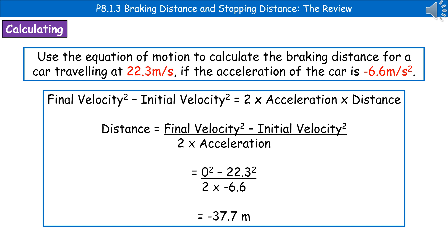Substituting in the values: the final velocity when braking will be 0, minus the initial velocity of 22.3, remembering to square them, divided by 2 times minus 6.6. The minus sign is important. Once calculated, the answer is minus 37.7 metres. Remember to include the sign — the sign is important.